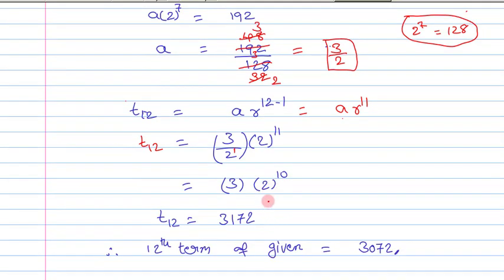On simplifying, we get the value of T12 as 3072.